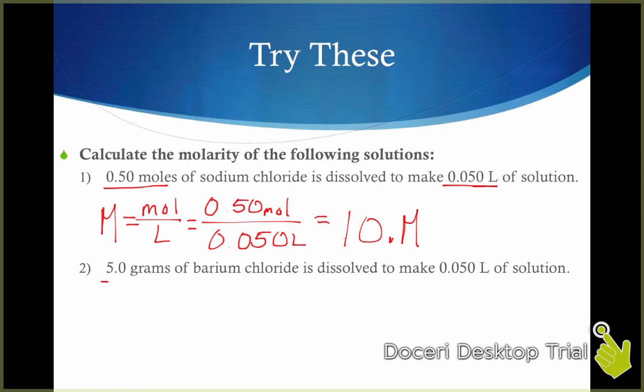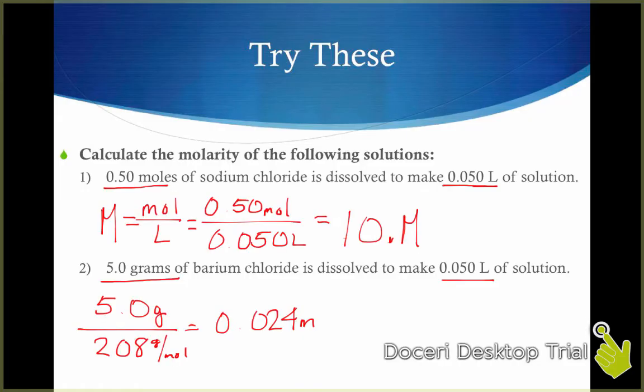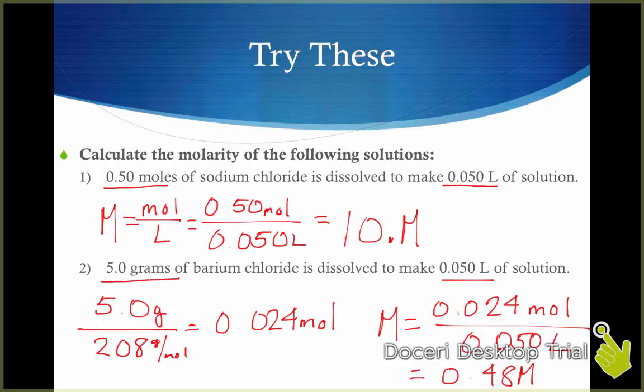In the second example, we're asked to find the molarity of a solution with 5 grams of solute in 0.050 liters of solution. This problem is different because first we have to convert 5 grams to moles. As you know, to convert to moles, we divide by the molar mass, which for barium chloride is 208, and we find that we have 0.024 moles of solute. Now, using our molarity equation, we can divide 0.024 moles of solution by 0.050 liters, and we get a molarity of 0.48 molar, a relatively dilute solution.